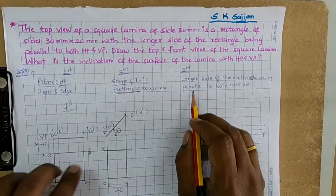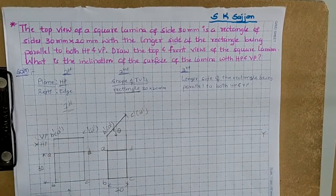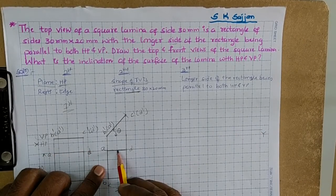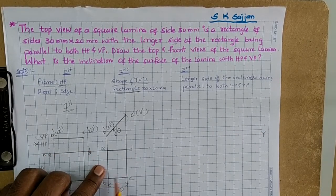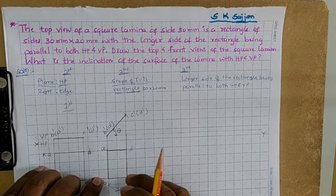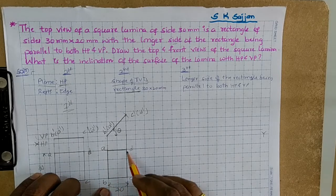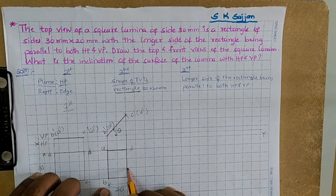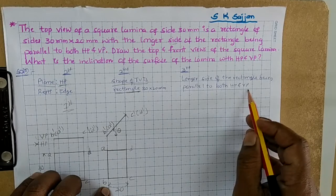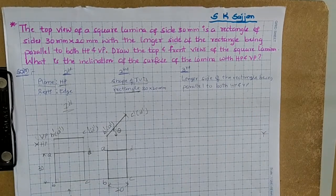For the third portion, the longer side of the rectangle is being parallel to both HP and VP. The longer sides here are A'B' and C'D', and the shorter sides are A'D' and B'C'. Consider any longer side — either A'B' or C'D' — and make it parallel to both HP and VP, that is, parallel to the X-Y line.